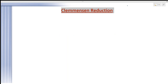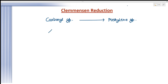Clemmensen reduction is one of the very important ways to convert the carbonyl groups of aldehydes or ketones to the methylene group. It means the carbonyl group can be converted to a methylene CH2 group, and this is happening with the help of amalgamated zinc (Zn/Hg) in the presence of concentrated HCl.